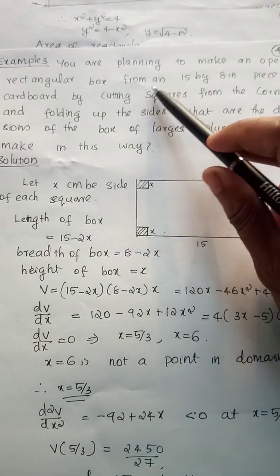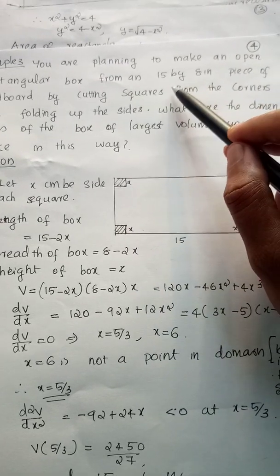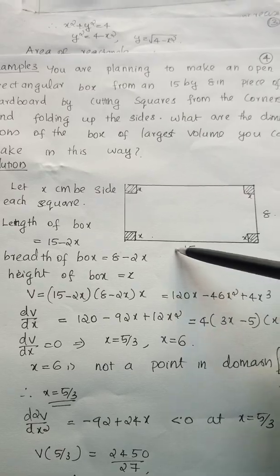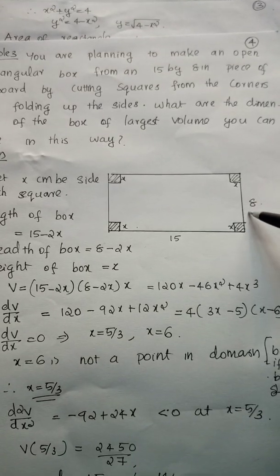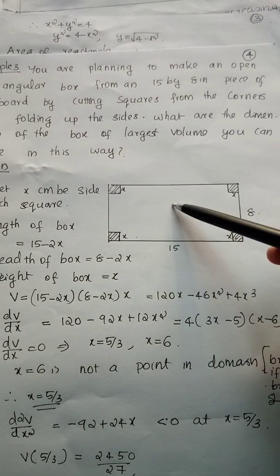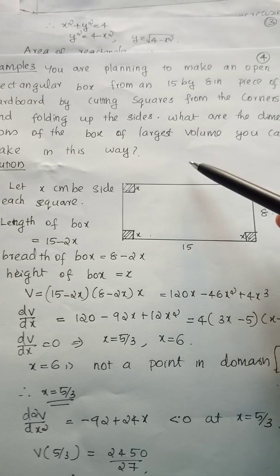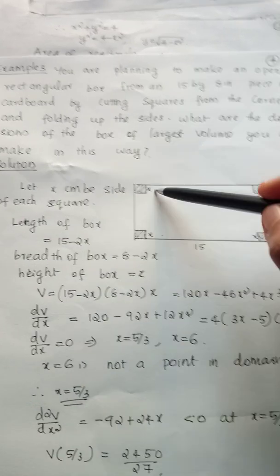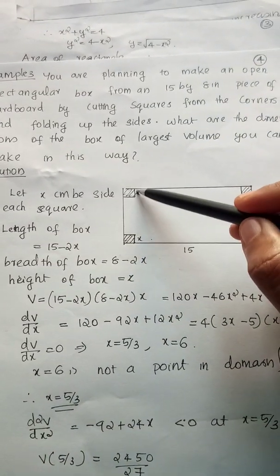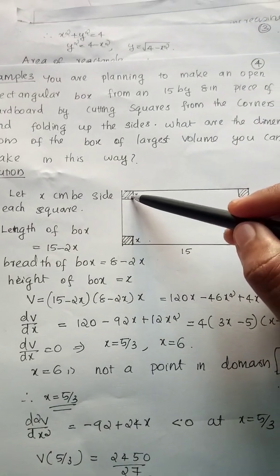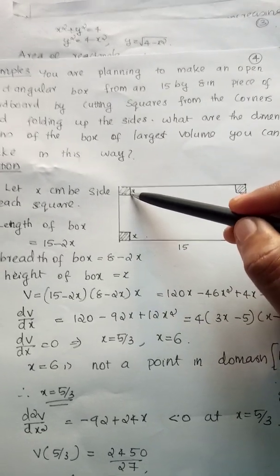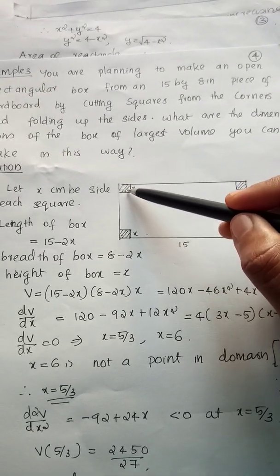Make an open rectangular box from a 15 by 8 inch piece of cardboard. 15 is the length, 8 is the breadth. We are cutting squares from the corners.